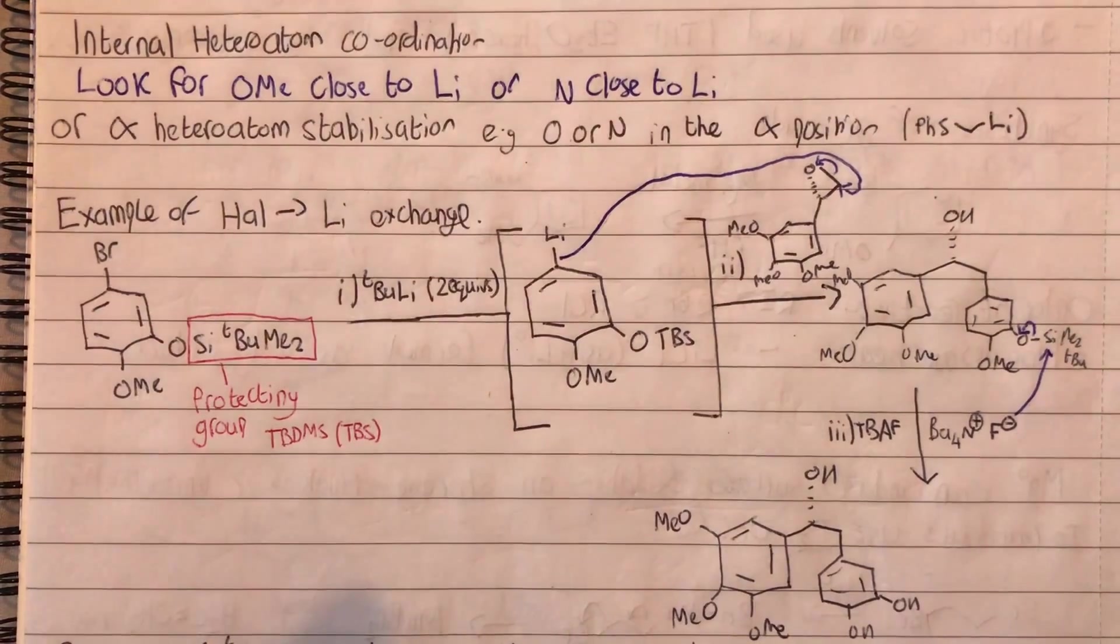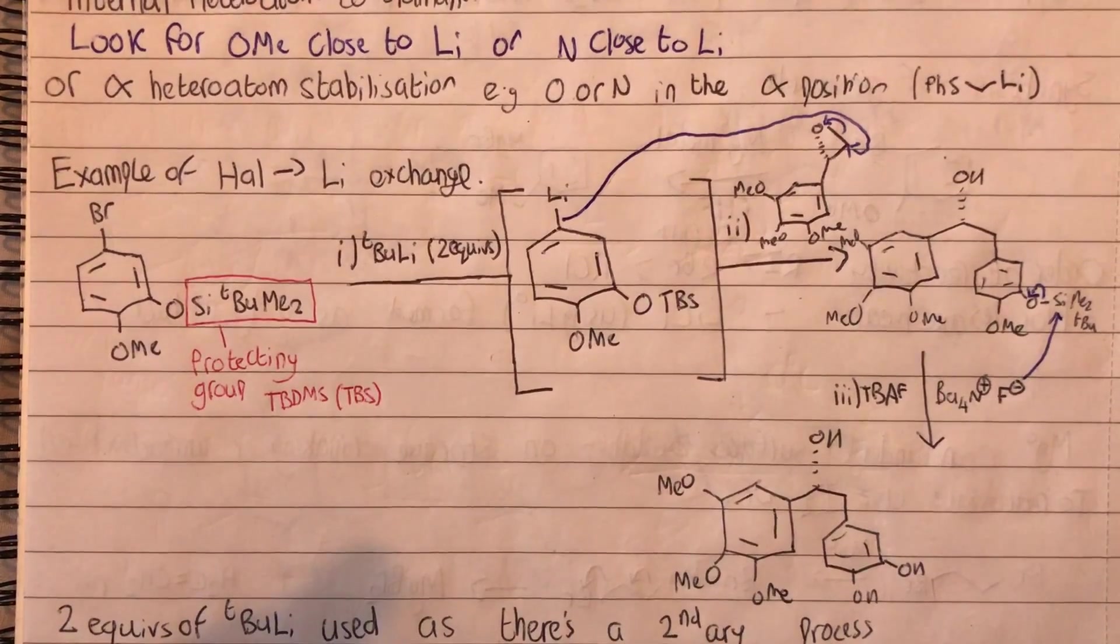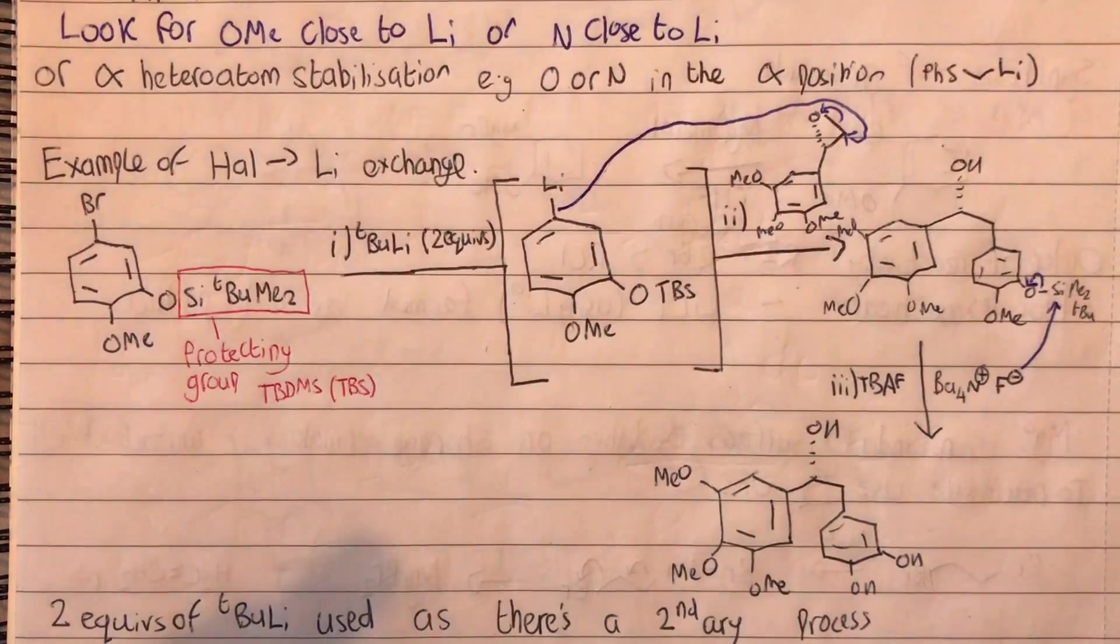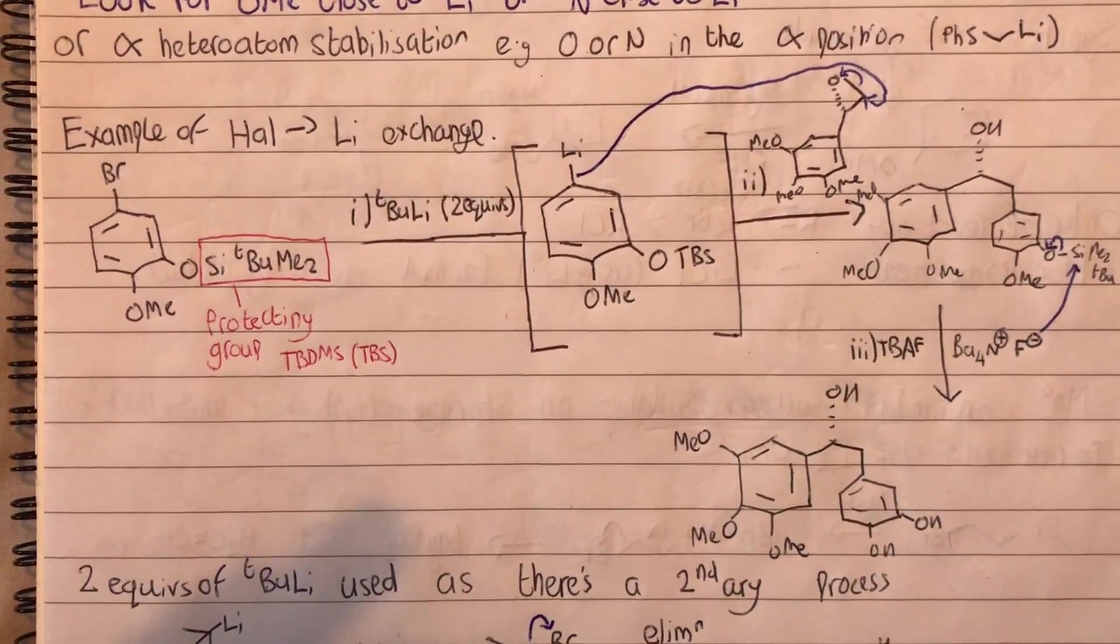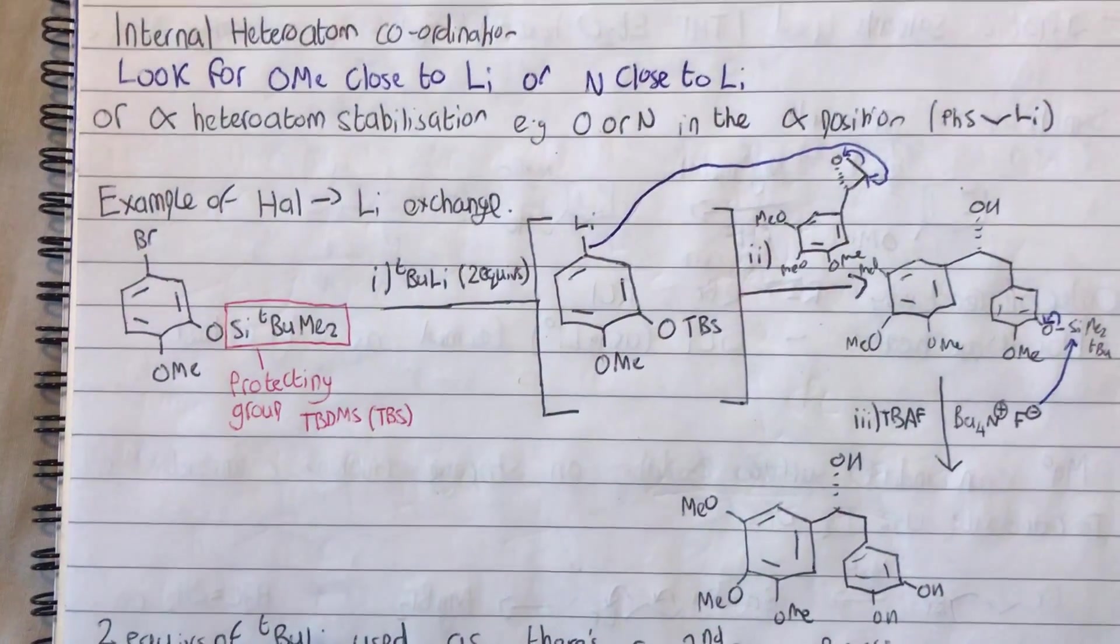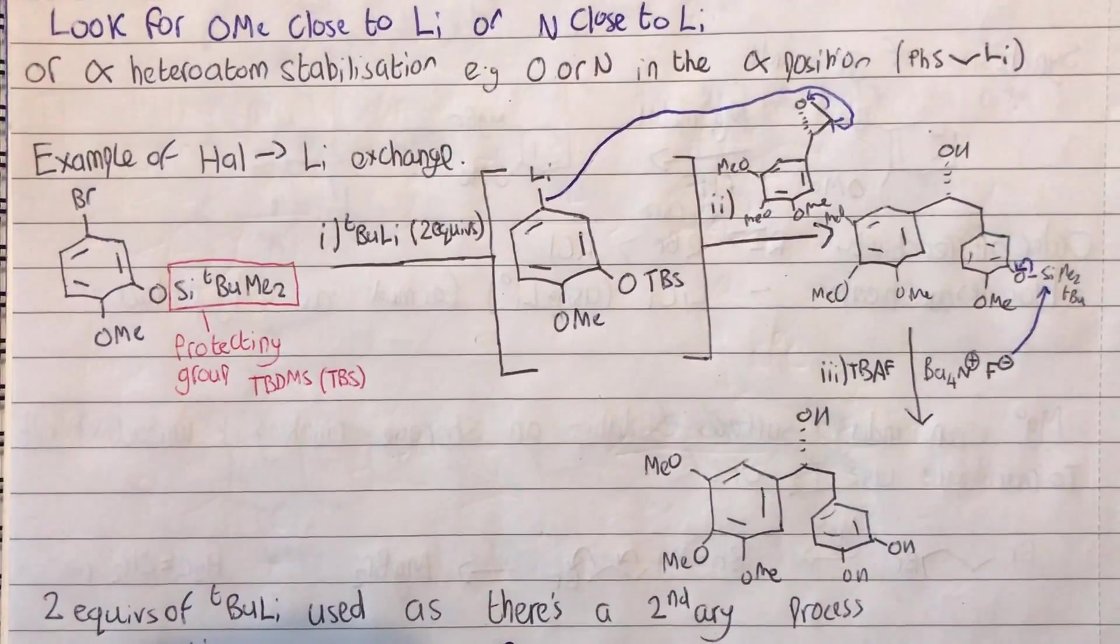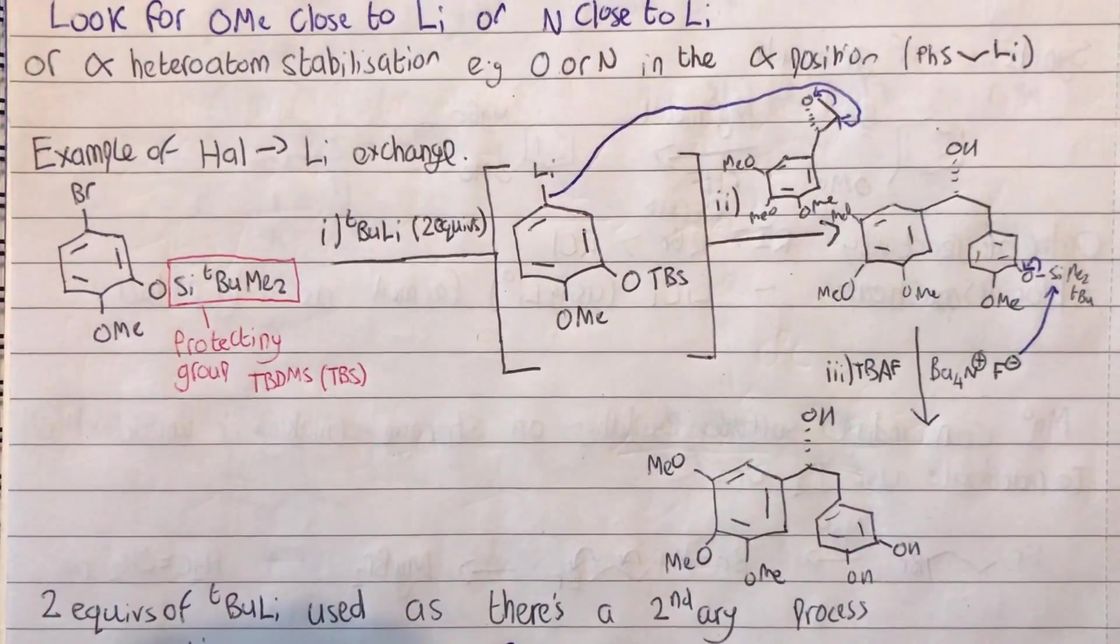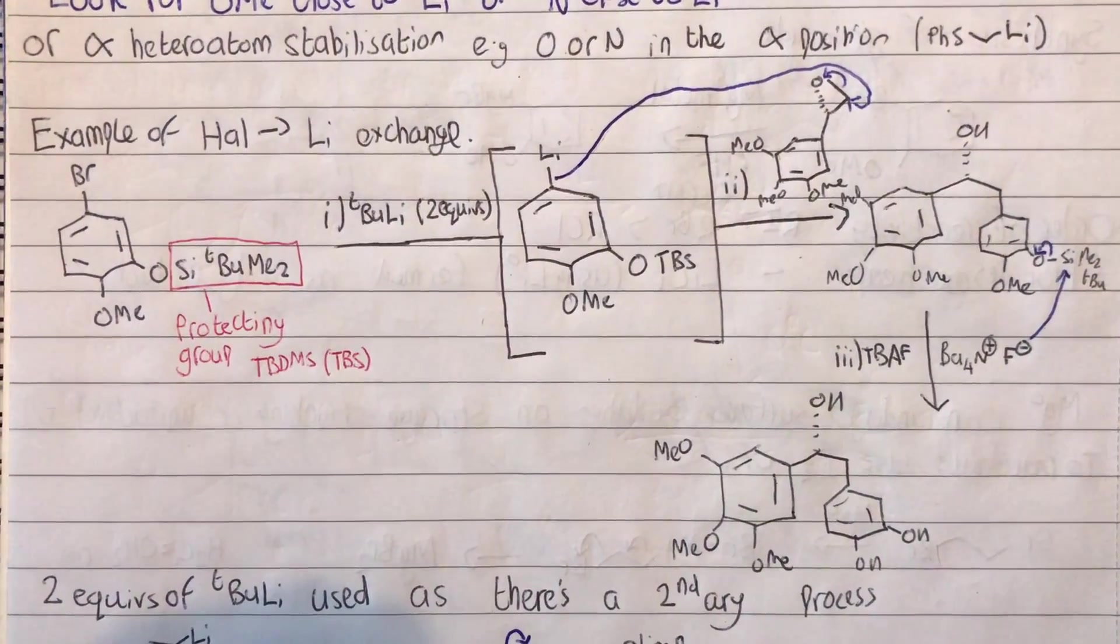This is an internal heteroatom coordination. We're going to look for O or N close to the lithium—an alpha heteroatom for stabilization. As you can see here we've got OMe there, that's how we've got some stabilization. In the first step we just do exactly what we did earlier in the basic general scheme—replace the bromine with lithium. As you can see there we're using the silicon as a protecting group, TBDMS or TBS.